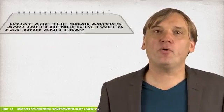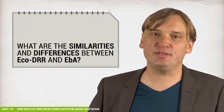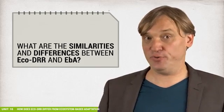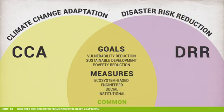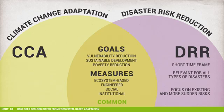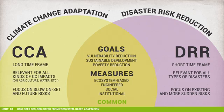In Unit 3 we already mentioned some similarities and differences between DRR and CCA. We discussed that both fields address hazards such as floods, droughts and landslides. But DRR also deals with hazards that are not climate related, such as tsunamis, earthquakes, volcanic eruptions, dust storms and avalanches. CCA in turn deals with long-term hazards such as sea level rise and long-term changes to temperature and rainfall patterns, which are not in the focus of DRR.